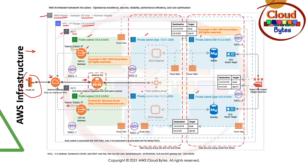Now let's talk about NACLs. In this case, we have NACL1 associated with both public subnets. Each subnet can have only one NACL. The application load balancer sits under a red box called the external security group (external SG), which means it has a security group that allows interaction with IPs coming from the internet.